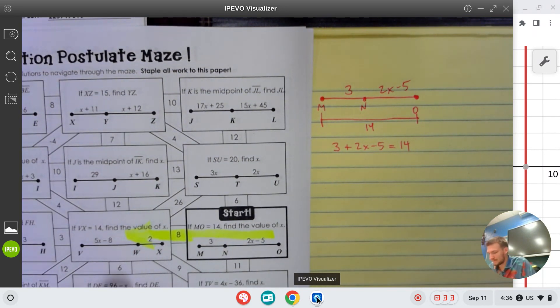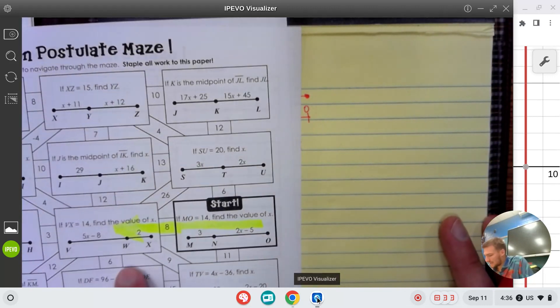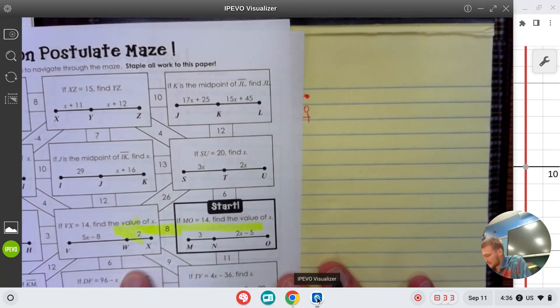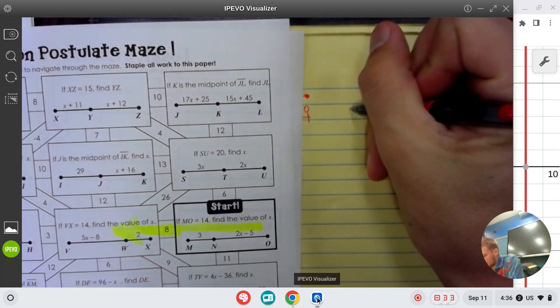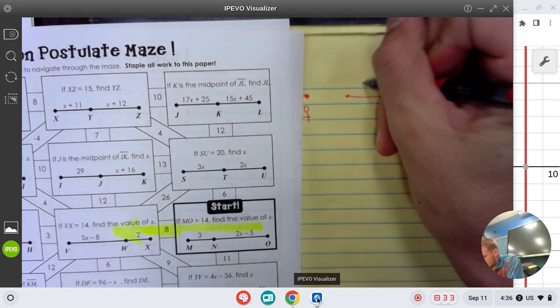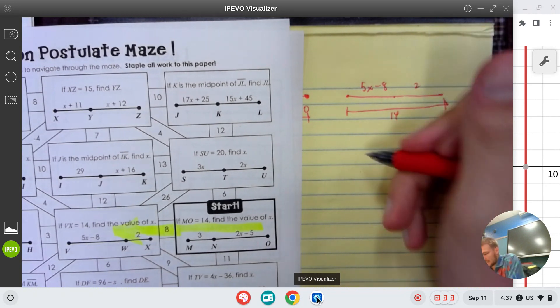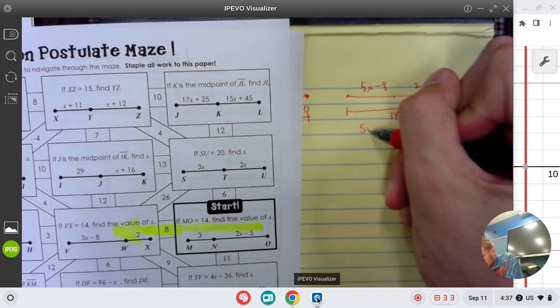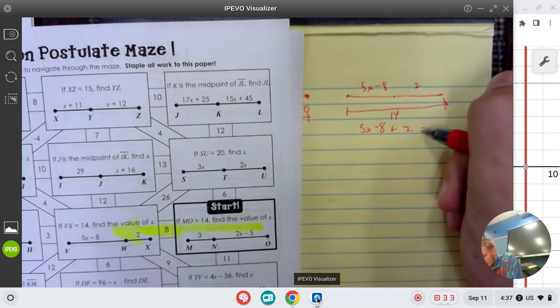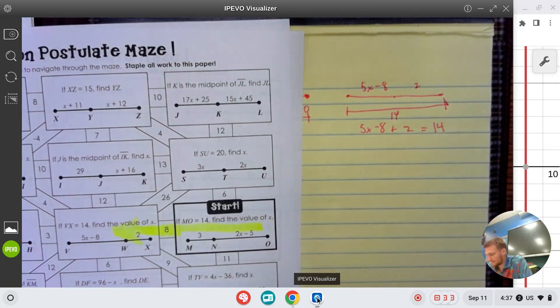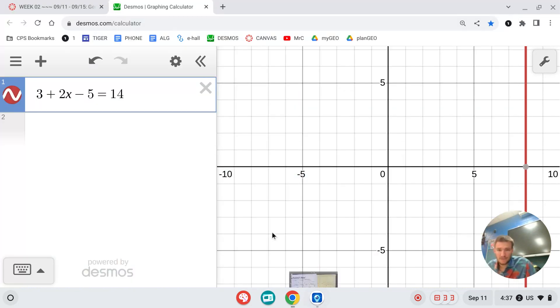Now I'm going to move over into this box and solve that question. This question says VX equals 14. It looks like pretty much the same exact question again, so I'm going to line it up really simple: 5x minus 8 and 2, and the whole thing was 14 this time. The left plus the right equals the whole thing. I go to Desmos.